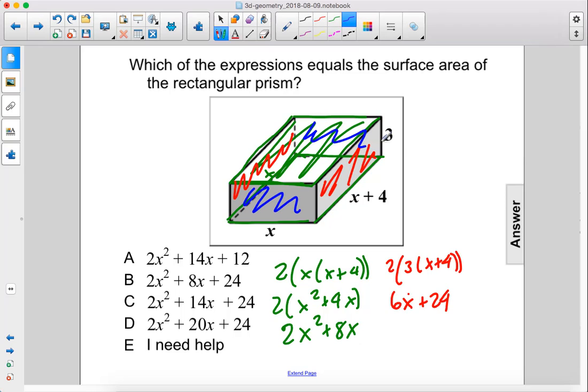Finally, we have these short sides here and there. That's 2 times x times 3. So that is 6x.